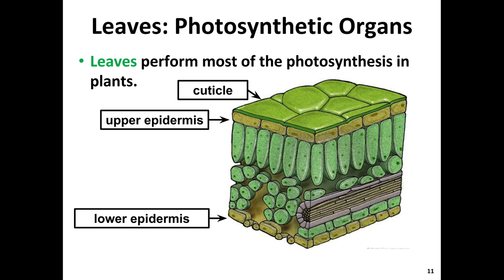The next two things labeled are the upper epidermis and the lower epidermis. These two organs provide a barrier from the external environment from the other cells that exist inside the leaf. We can think of these two epidermis layers as doing the same thing our skin does.